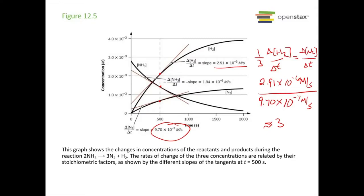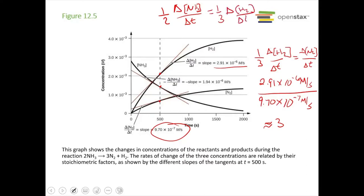Relating hydrogen to ammonia from the balanced equation: −½ × delta[NH₃]/delta t = ⅓ × delta[H₂]/delta t. Comparing the slopes: 2.91 × 10⁻⁶ divided by 1.94 × 10⁻⁶ gives 1.5, or three-halves, which reflects the stoichiometry — three hydrogens are made for every two ammonia molecules, giving a ratio of 1.5.